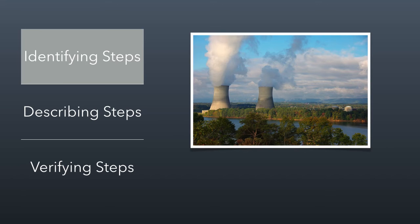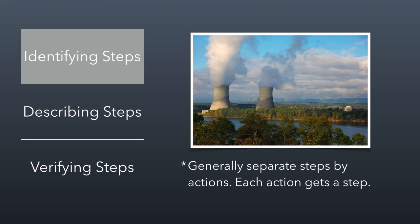When you're identifying the steps, think in a very granular way. Could somebody follow your steps to a successful completion if they were facing high stress load? If you're going to make a mistake, it's better to give too much detail than not enough. The best way to think about this: separate steps by actions — each action gets a step. If it's 'turn to this page,' that's a step. If it's 'click on this button on your screen,' that's a step. Each time the person has to take an action, that should be a separate step in the instructions.